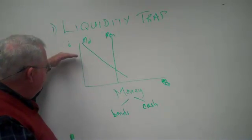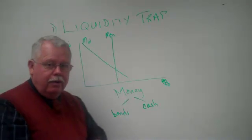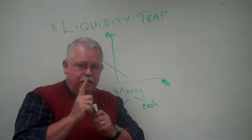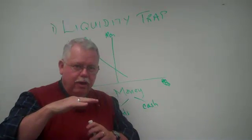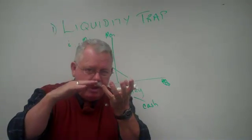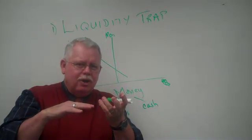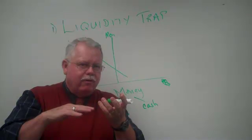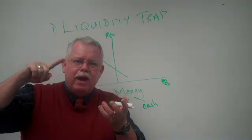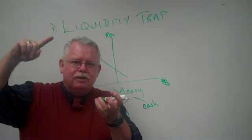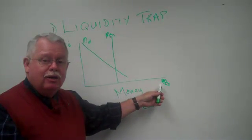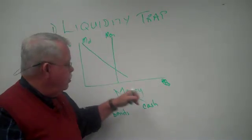This goes back to our explanation about bond prices and interest rates. If interest rates get down very low, do you want to have a lot of your money tied up in bonds? If they're only paying 1%, probably the only way interest rates will move is to go back up. And if interest rates start going back up, the value of your bonds is going to fall. So people want to hold more cash when interest rates are low.